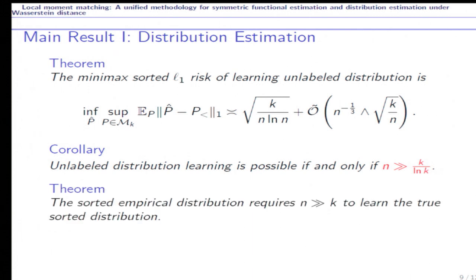And as a comparison, the sorted empirical distribution actually requires n much larger than k samples to learn the true sorted distribution, which means that estimating sorted distribution is much easier than estimating the whole distribution. And also, the empirical distribution cannot achieve the optimal performance.